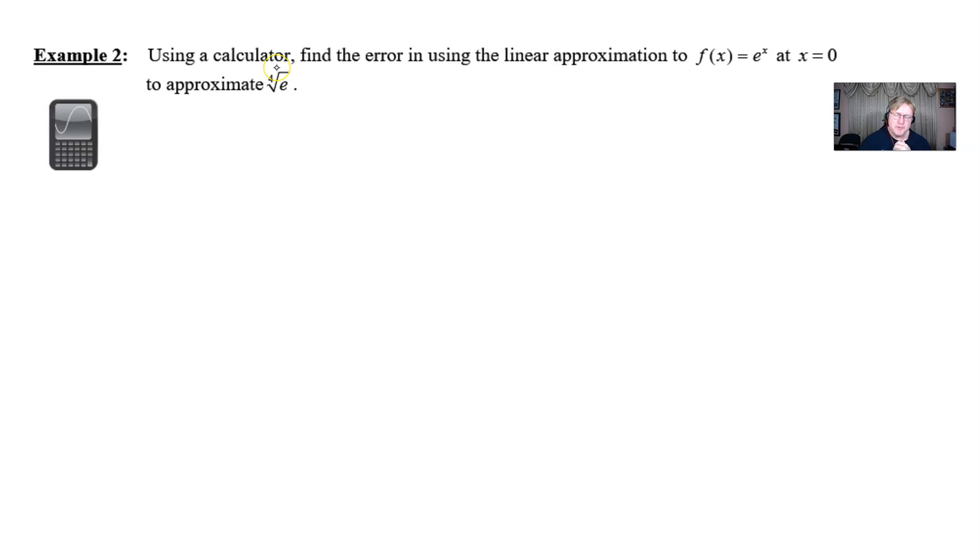But the fourth root of e might be a little bit tough, right? E is this weird number 2.71 blah blah blah. What number times itself times itself times itself again would equal that irrational number? Definitely a little bit trickier. So we're going to use this idea of linear approximation much in the same way that we did our previous problem.